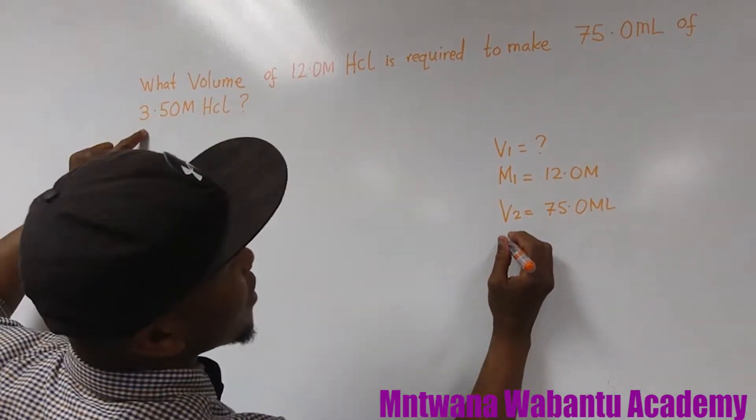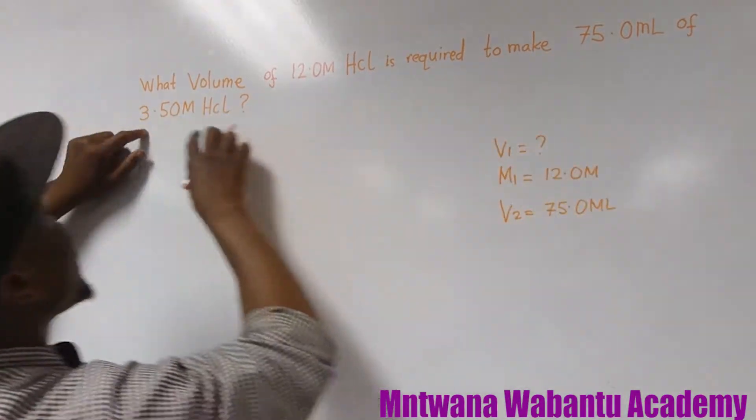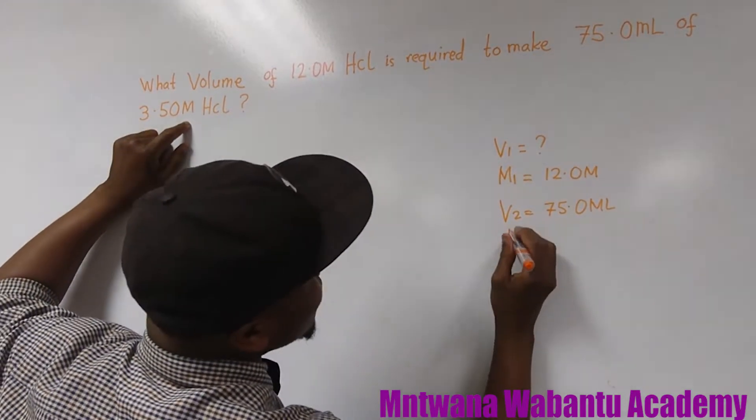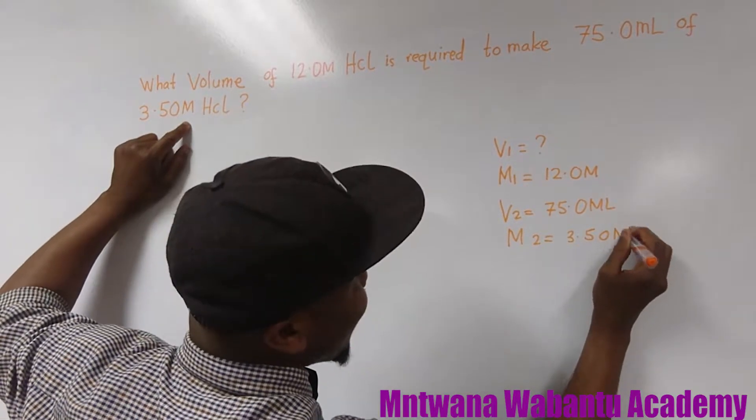So this is going to be volume 2, 75.0 milliliter. This is going to be 3.50 molarity of hydrochloric acid. So this is going to be M2, which is equal to 3.50 molarity.